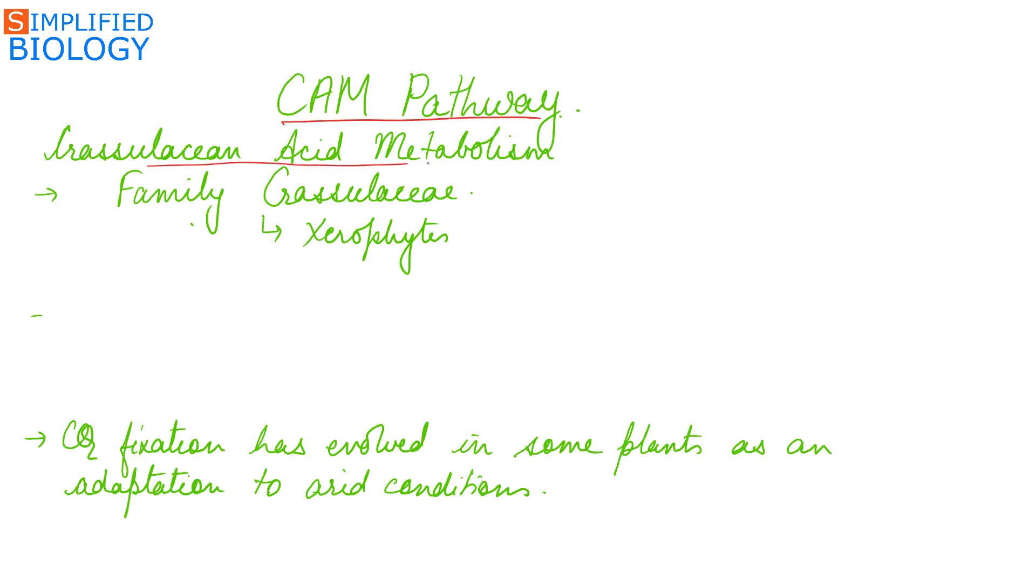CAM pathway, that is Crassulacean Acid Metabolism, was first discovered in family Crassulaceae. They are xerophytes - plants that grow under dry conditions. They have thick leaves, reduced leaves, thick cuticle, and sunken stomata.